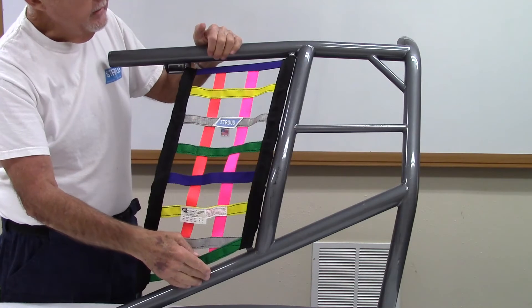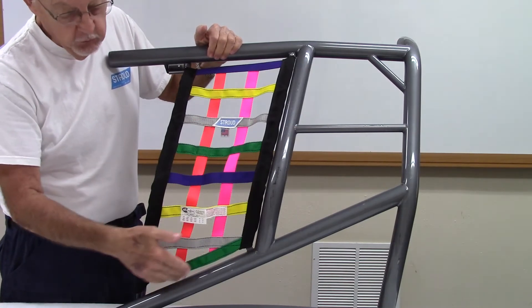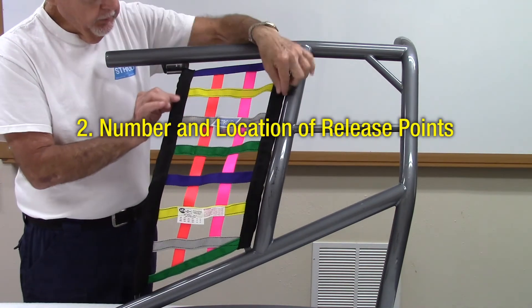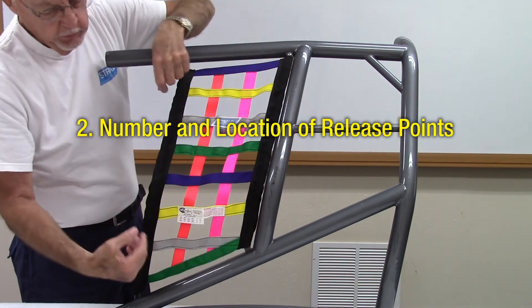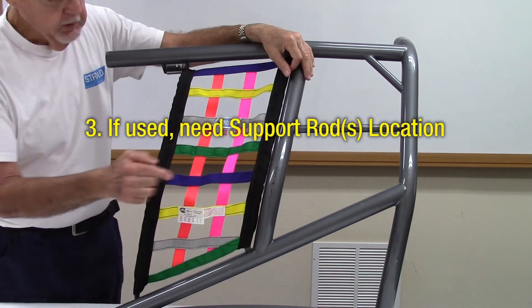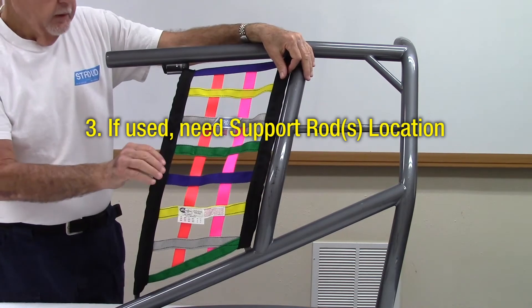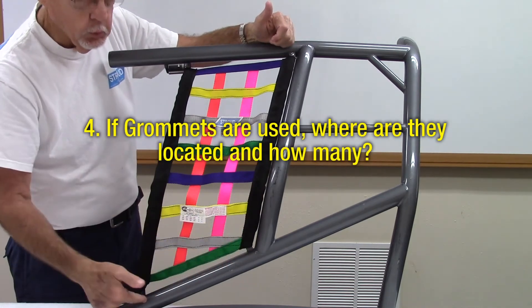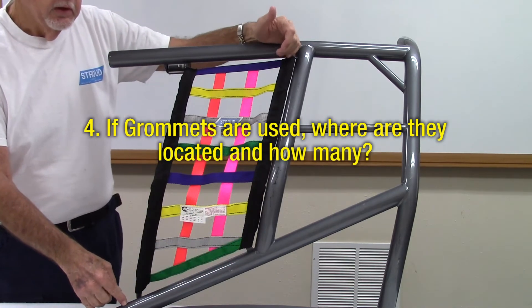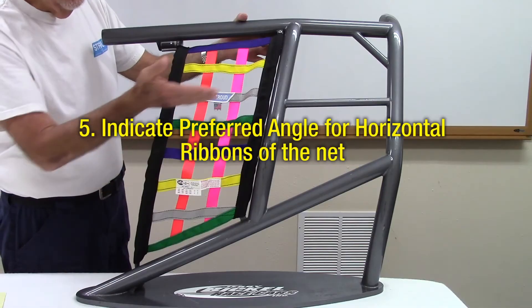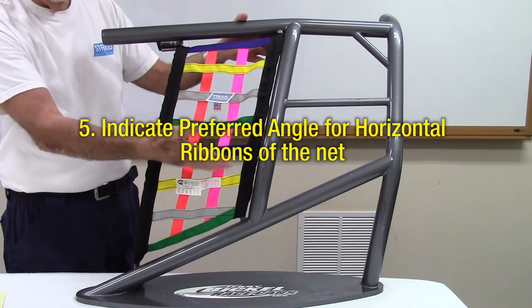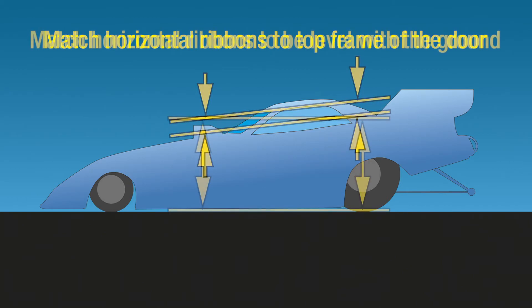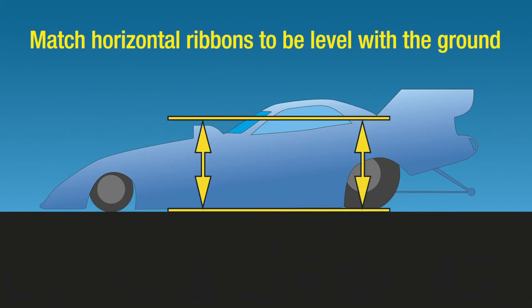Regardless of the method you use for ordering your custom net, we need to know the following. The diameter of the roll cage tubing where the net attaches. The number of release points, usually one or two, and whether they are located at the top or front of the net. If support rods are used, note whether they are located at the top, sides, and or bottom of the net. If grommets are used for the fixed mounting side or sides, indicate how many and at which edge they are located. Indicate the angle you would prefer for the horizontal ribbons of the net. Examples would be to match the top frame of the door or horizontal to the ground depending on how the vehicle sets on the track surface.